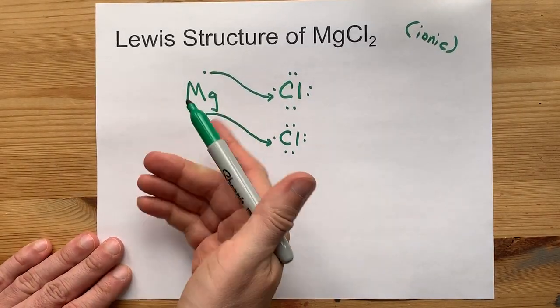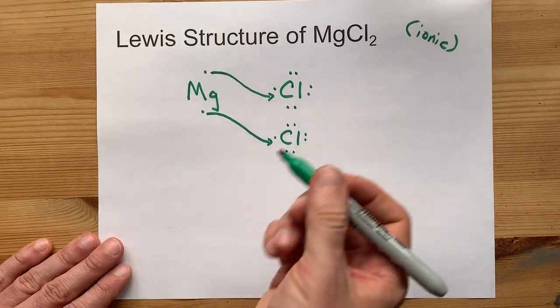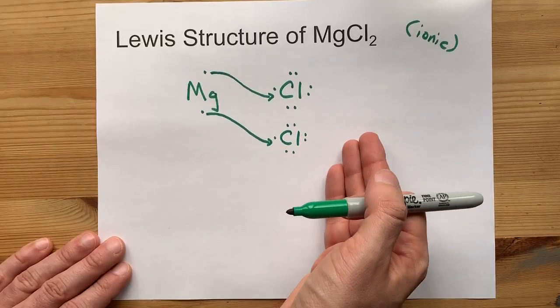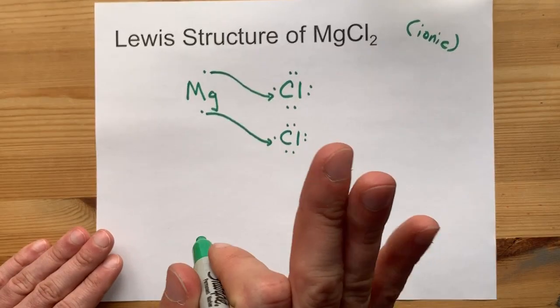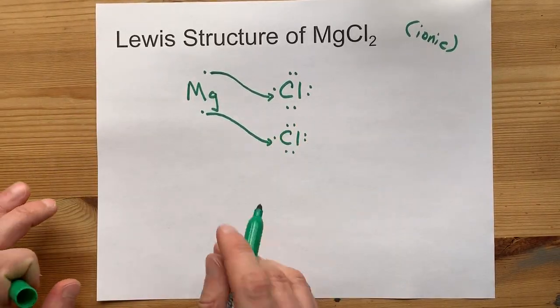This means that magnesium will have no electrons left. That's ideal and stable. These chlorines will have full 8 outer electrons in their outer shells. That satisfies the octet rule and makes them stable. This is on our way.